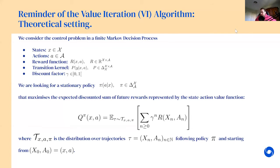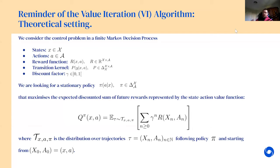One way to frame the control theory problem is with a Markov Decision Process. An MDP is a tuple consisting of states — basically where you are, the situation you're in — which we consider finite. To navigate between states, you have actions: the agent can take an action to go from one state to another, like in a graph.